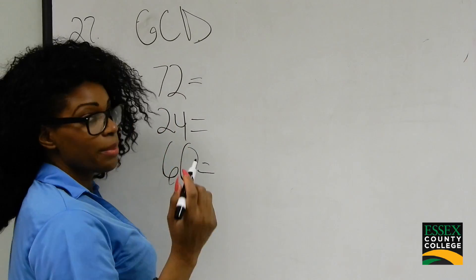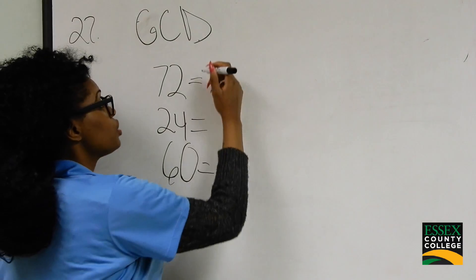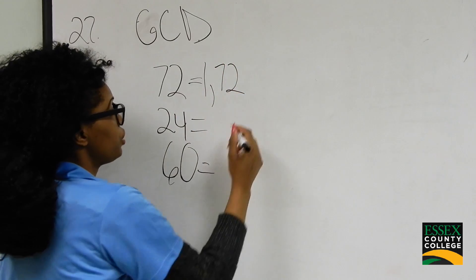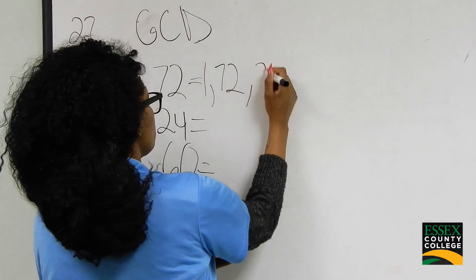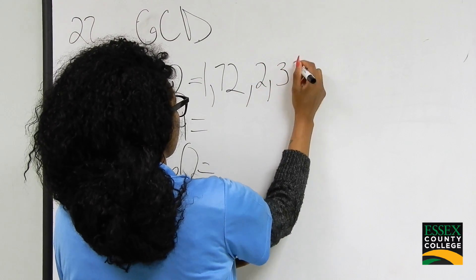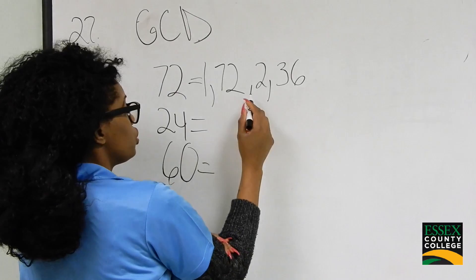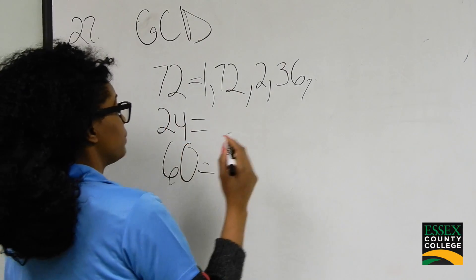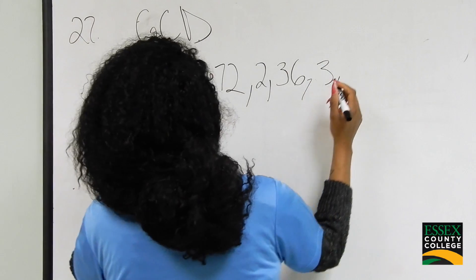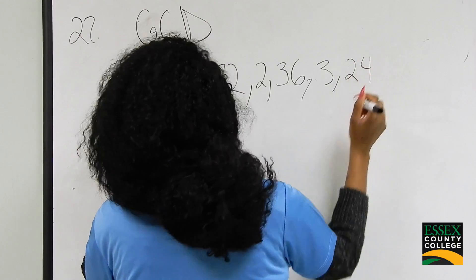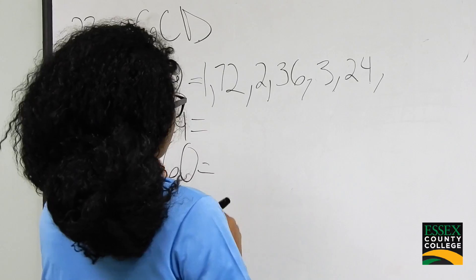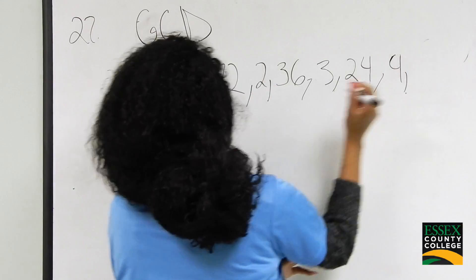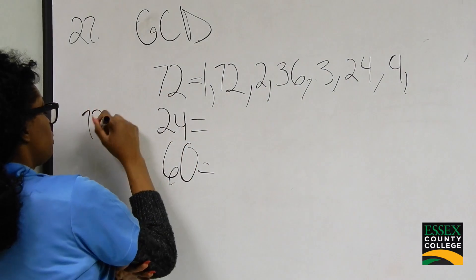We can go by 1, 2, 3, 4, and so on. So 72 divided by 1 is 72, so 1 and 72 are factors of 72. If you divide by 2, you're going to get 36, so 2 and 36 are factors of 72. Can 3 go into 72? Yes, and when you do that you're going to get 24, so 3 and 24 are factors. Can 4 go into 72? Yes it can.